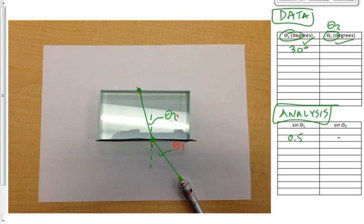You're gonna graph it. Which column of your table is going to go on the x-axis, sine theta 1 or sine theta 2? Always the first column goes on the x-axis, second column goes on the y-axis. So you're gonna get a graph that looks like this: sine theta 1 on the x-axis, sine theta 2 on the y-axis.